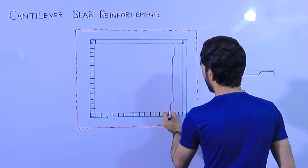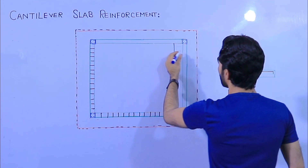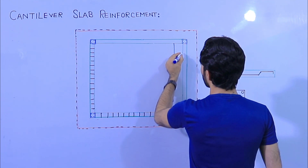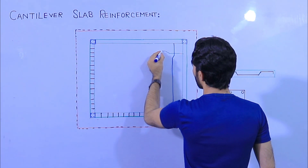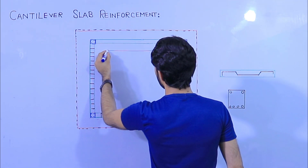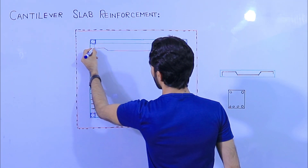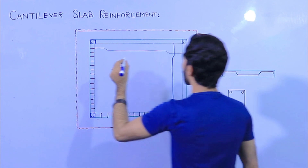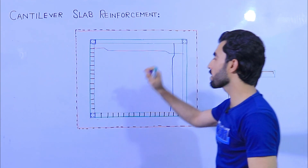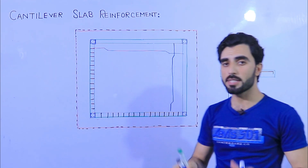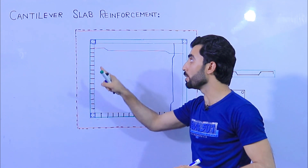The bent-up bar should be extended with an L/4 distance, like this, on each side. We have main bars and distribution bars. Remember, the bent-up bar should be extended — it should become the same on each side.